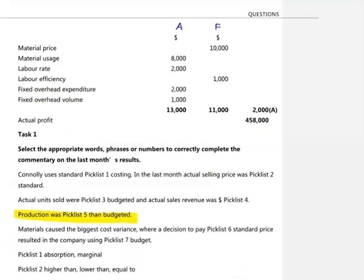Next, we need to compare the actual production to the budgeted production. Make sure you don't assume sales and production will be at the same level — they may well be different. There's no obvious direct information about actual or planned levels of production, but we do have our fixed overhead volume variance, which is made up of the difference between the budgeted and actual level of production multiplied by the fixed overhead rate of $10 per unit. Dividing the variance by $10 per unit, I can see the difference must be 100 units. As it's an adverse variance, it looks like we've produced less than we planned to.